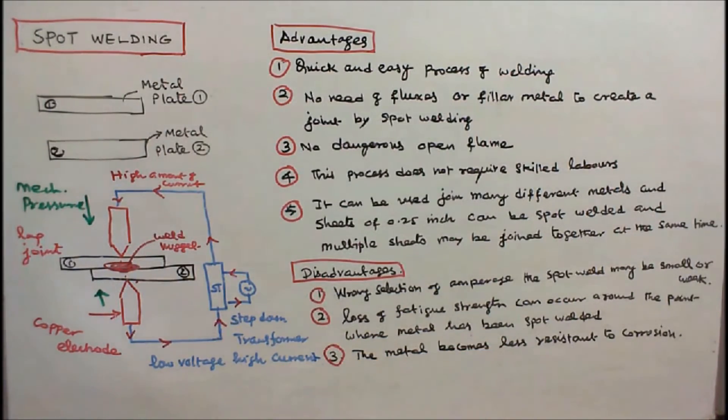Number three, the metal becomes less resistant to corrosion. These are all the advantages and disadvantages of spot welding. With this I conclude my lecture, thanks for listening.